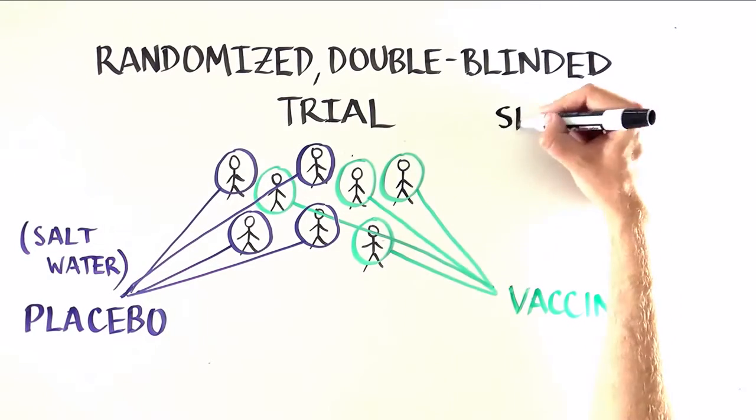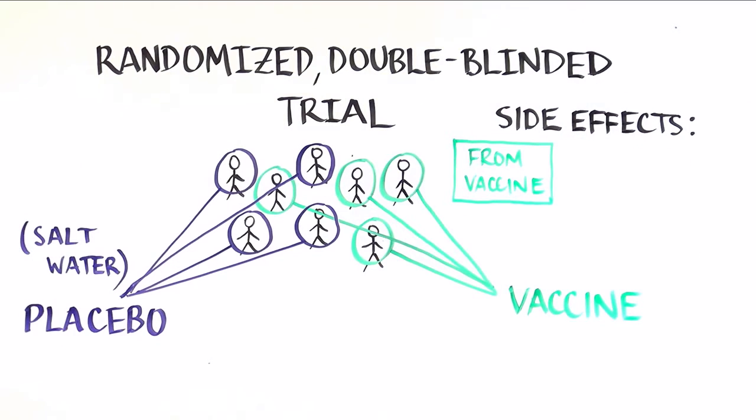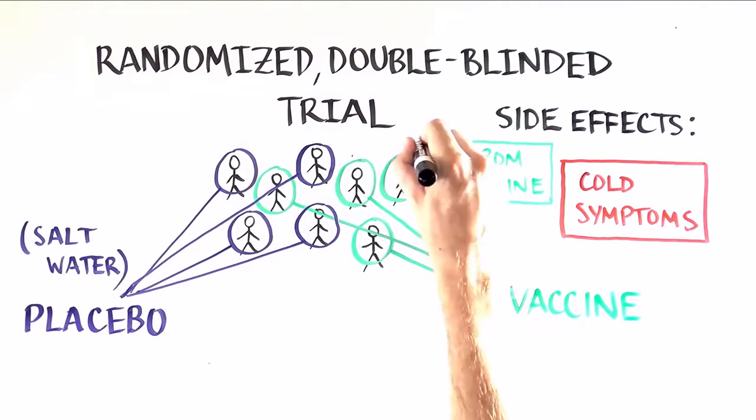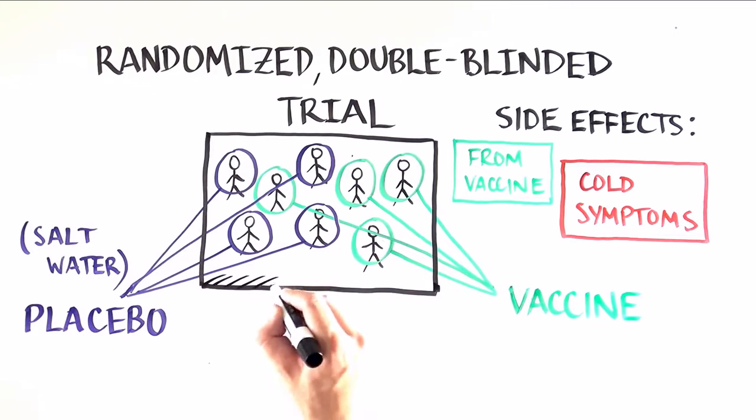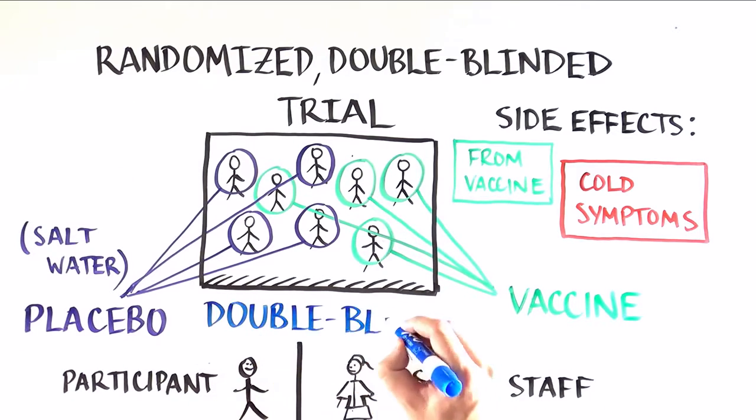We do this to be able to separate out side effects that are due to the vaccine from those that are just happening to people in the community at the same time, like the rate of cold symptoms or headaches. And we double-blind, meaning neither the participant nor the study staff know who is getting which type of injection. That prevents both volunteers and the staff from over- or under-reporting symptoms. We advise participants to tell us about everything that is happening to them.